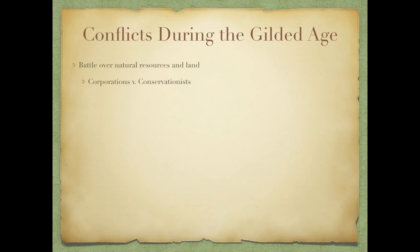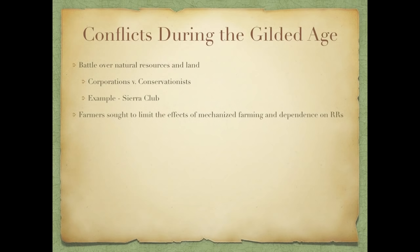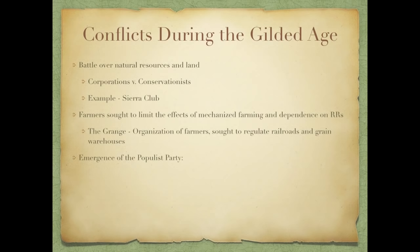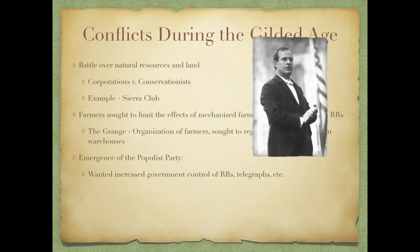Let's talk about the battle over natural resources and land — this was between corporations and conservationists. You really see the beginning of environmental movements, for example the Sierra Club, which sought to preserve areas of the environment. Farmers during this time struggled and sought to limit the effects of mechanized farming, which displaced many farmers, and their dependence on railroads. They formed organizations such as the Grange, which sought to regulate railroads and grain warehouses, though they were not as successful as they hoped.